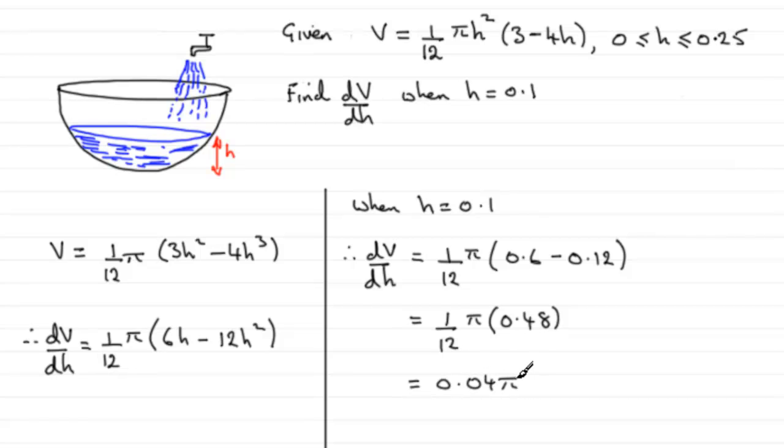You could leave it like that if you wish. Or you could think of this as 4 hundredths, which is 1/25th. So you've got π/25. Okay, so that's your rate of change of V with respect to h.